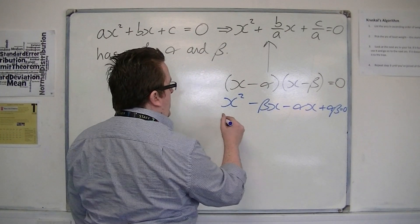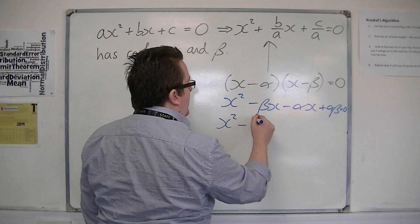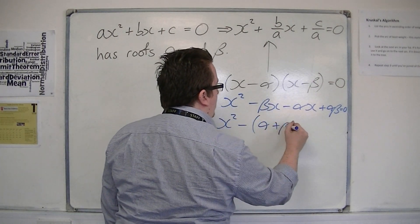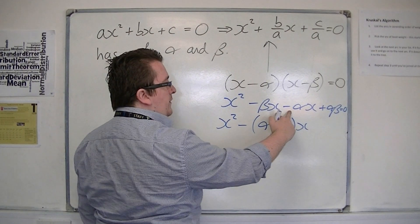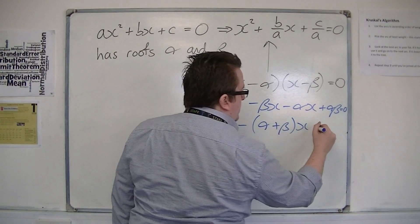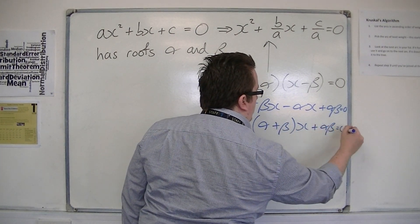Now, you could rewrite that as x² - (α + β)x, so you factorize the α and β into the bracket, plus αβ = 0.